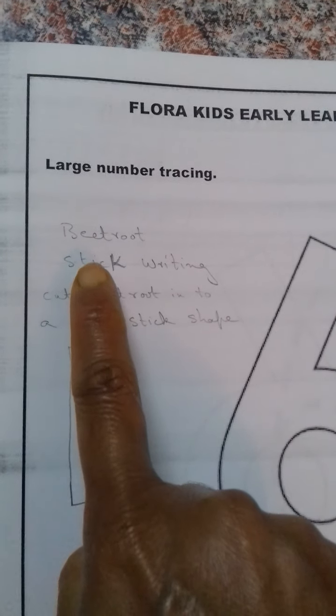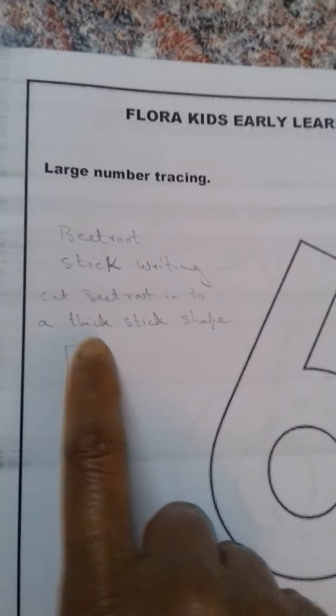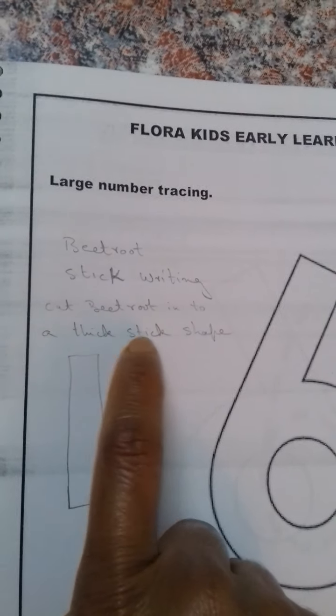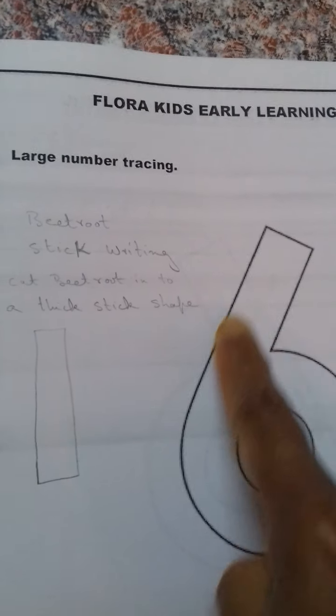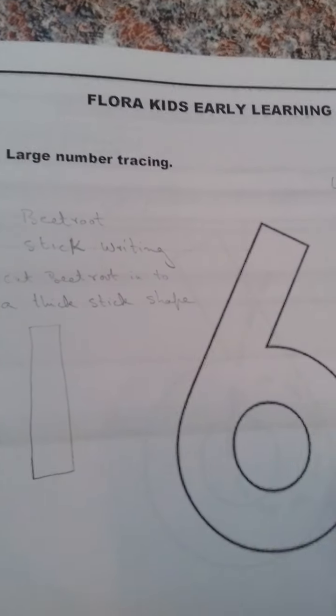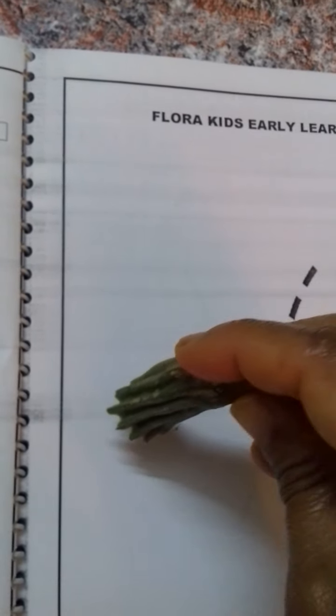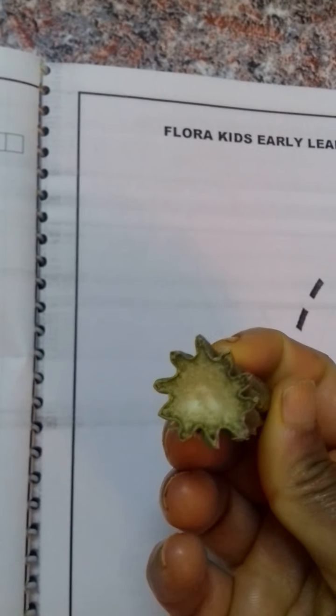Which later on the child uses to hold the pencil. Then you can give beetroot sticks for writing - cut the beetroot into thick stick shapes like this and ask the child to write on the number so you get the natural pink color. Then you can give ladies finger dipped in watercolour so that the child can press to make impressions like flower, otherwise you can give reach card cut like this dipped in watercolours.